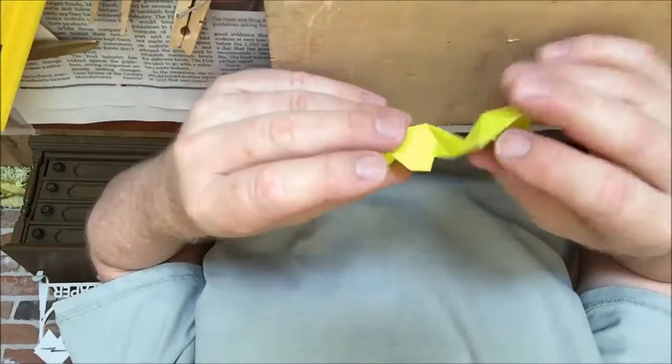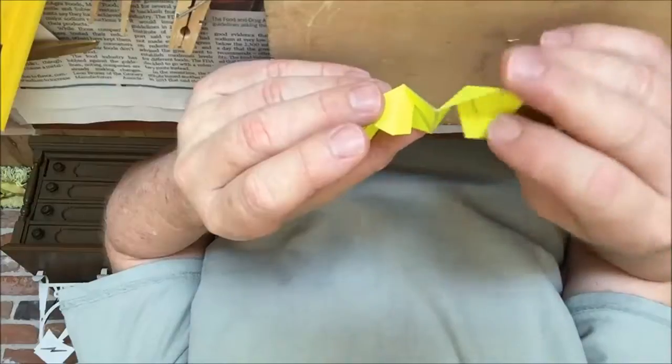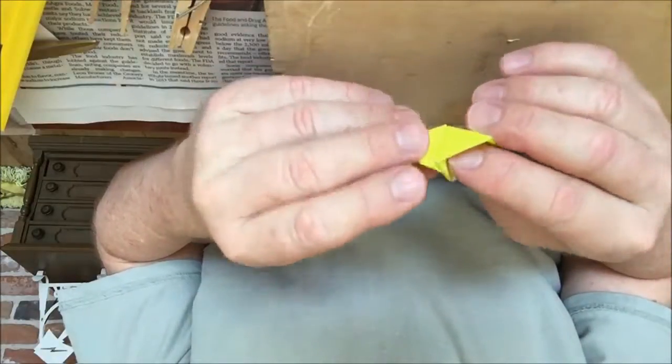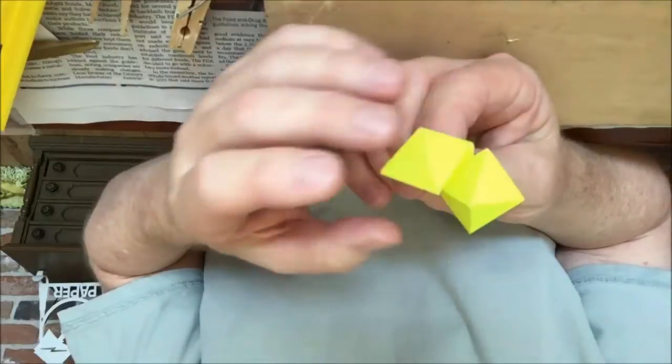To glue it, you only want to glue the two tabs. And if you fold it backwards on this segment to get the two square-based pyramids, put glue on one tab here, one tab here.